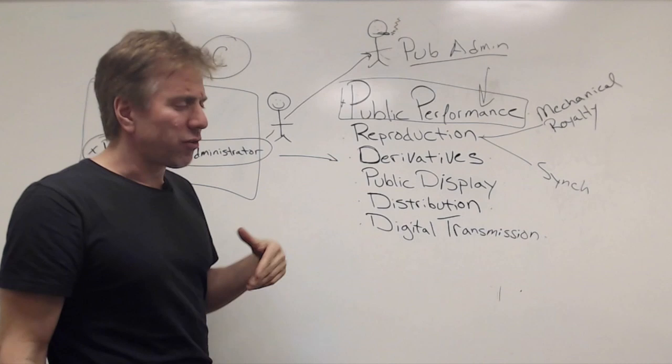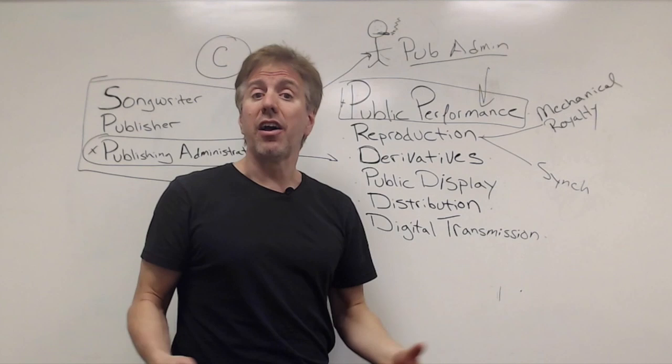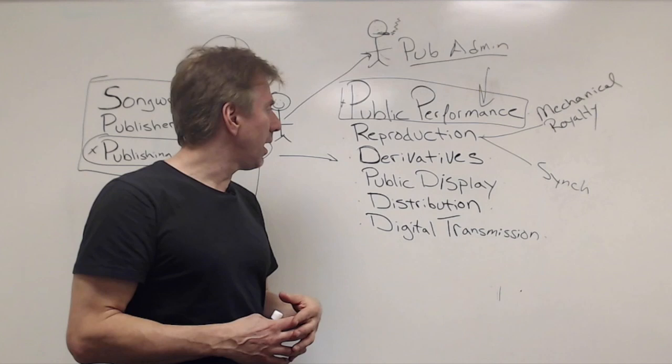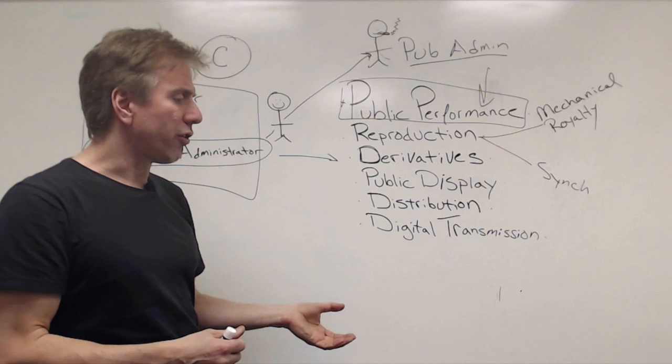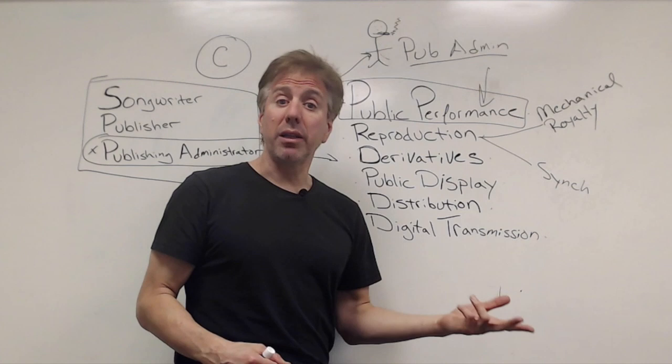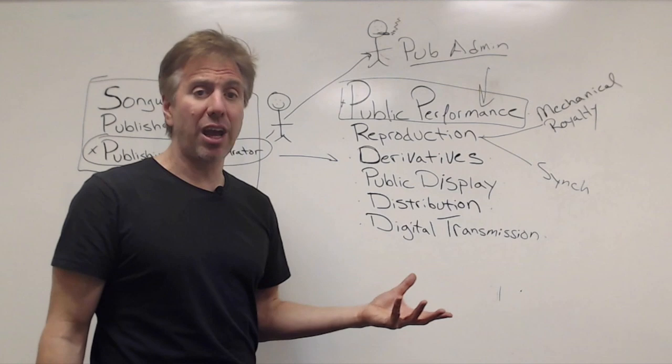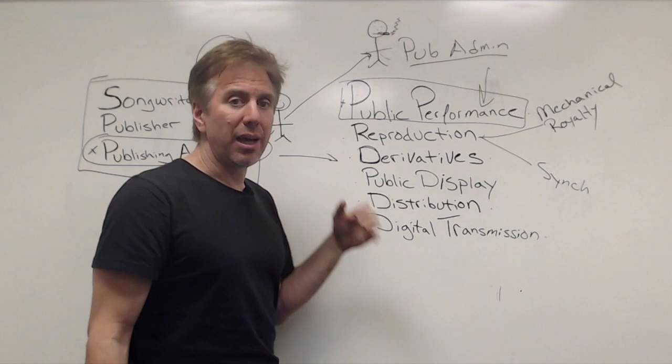The next one, something called derivatives. Derivatives are if you take a song and you translate it into another language. That's a derivative. So you need to get a special license for that. Or if you take a song and turn it into a book, that's a derivative. So translations, another one is sampling. So you take Can't Touch This by MC Hammer, which is sampling Rick James. That's a derivative work. And again, you need a special license for that.